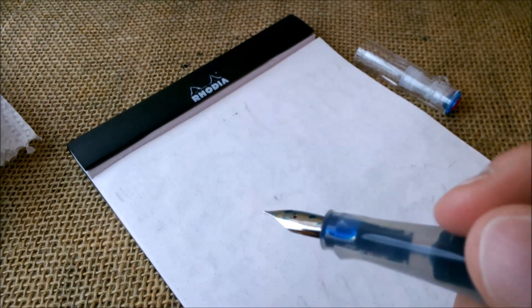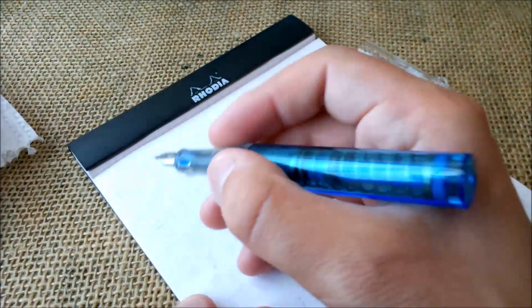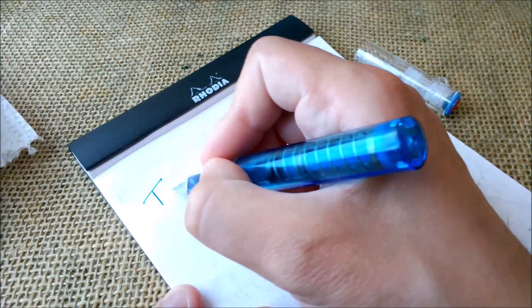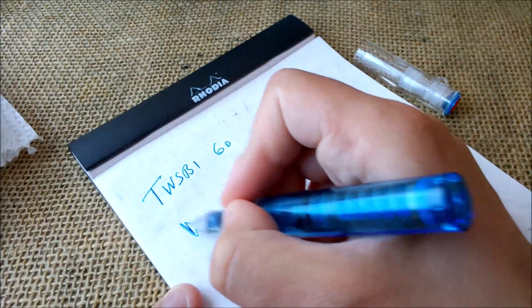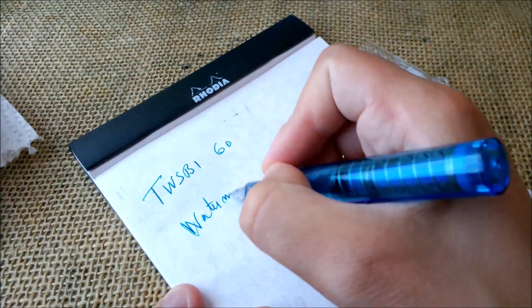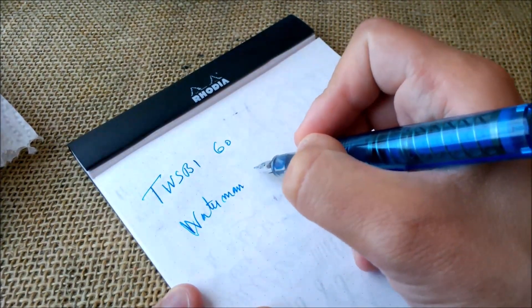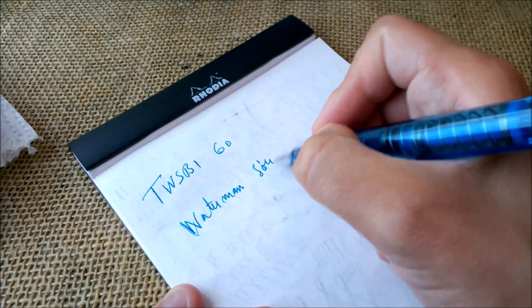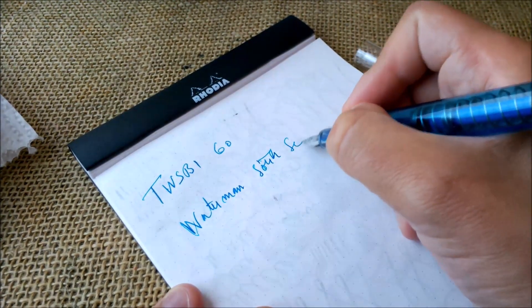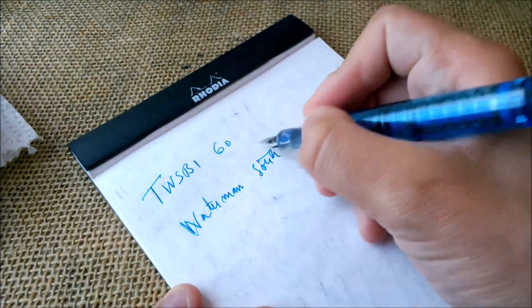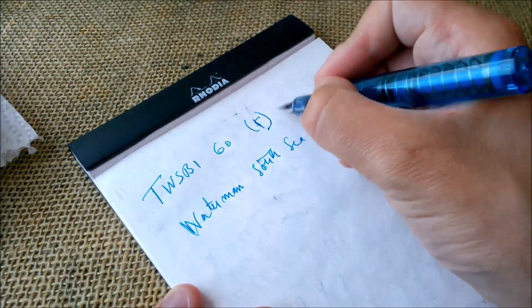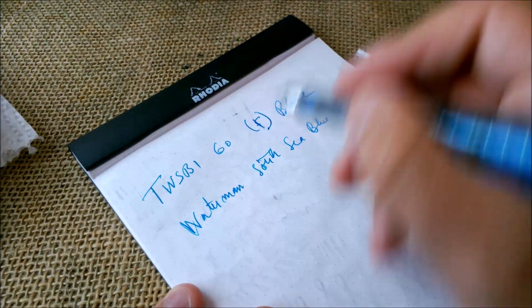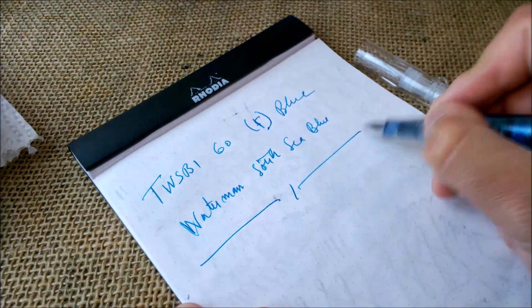And let's just look at how the pen works with the ink inside. So this is the TwissBee Go with Waterman South Sea Blue ink, and this has a fine nib and it is the blue version. So this is it.